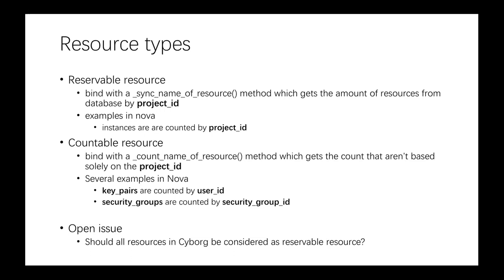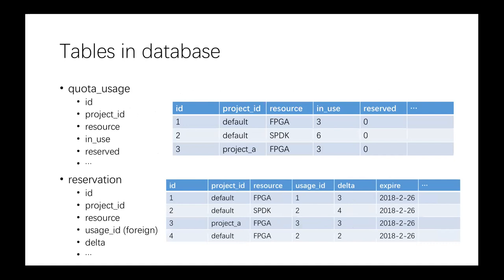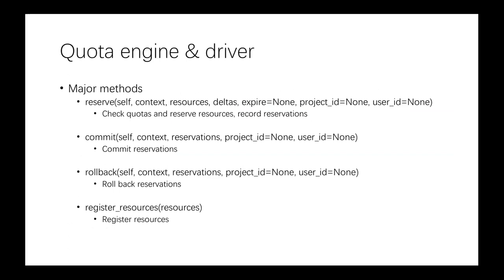Those are some typical tables in the database which have already been implemented in the previous project. There are some major methods which can be implemented in the quota engine, like reserve, commit, and rollback. Because there may be some failure in creating an accelerator or when processing with the drivers, we need to first reserve, and then if there are any failures, we can roll back the database to its original state.